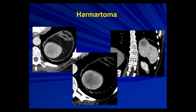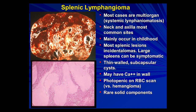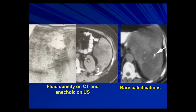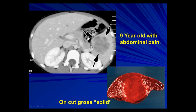Hamartoma is a much less common lesion — often solitary, solid, slightly heterogeneous, not cystic. Lymphangiomas are also uncommon. On cut gross they're indistinguishable from hemangiomas, but microscopically they're filled with non-specific eosinophilic material rather than blood. They can be solitary or part of a lymphangiomatosis involving multiple organ systems, can present in childhood, and are rarely calcified. Many bulk the contour of the spleen and are subcapsular — multiplicity and subcapsular location of near-fluid-density lesions should make you think about lymphangioma.